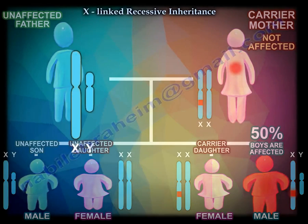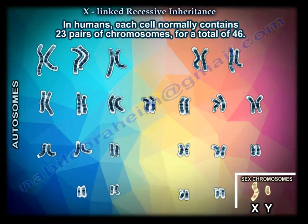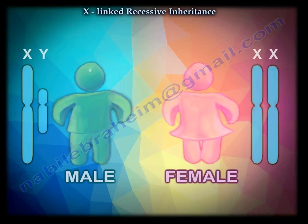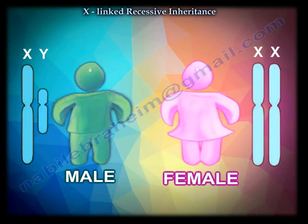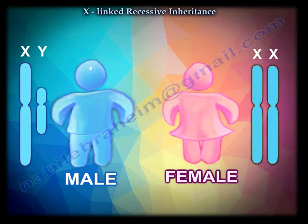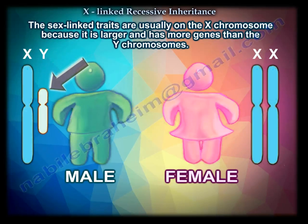We have 46 chromosomes, which contain our genes. Two of them determine the sex — they're called the sex chromosomes, and they are the last two chromosomes: X and Y. If you have XX, then you are a girl. If you have XY, then you are a guy. The sex-linked traits are usually on the X chromosome, because it is larger and has more genes than the Y chromosome.